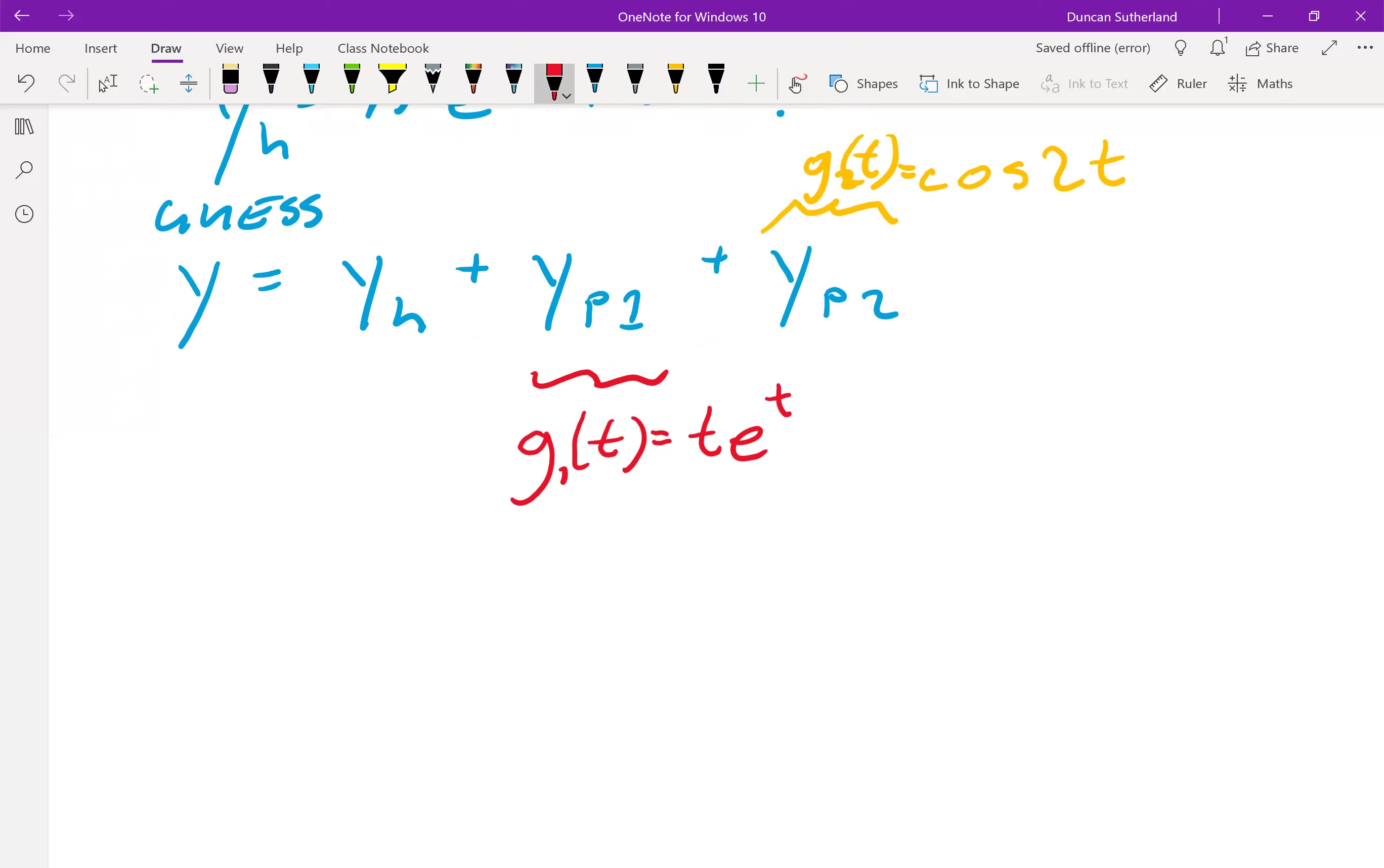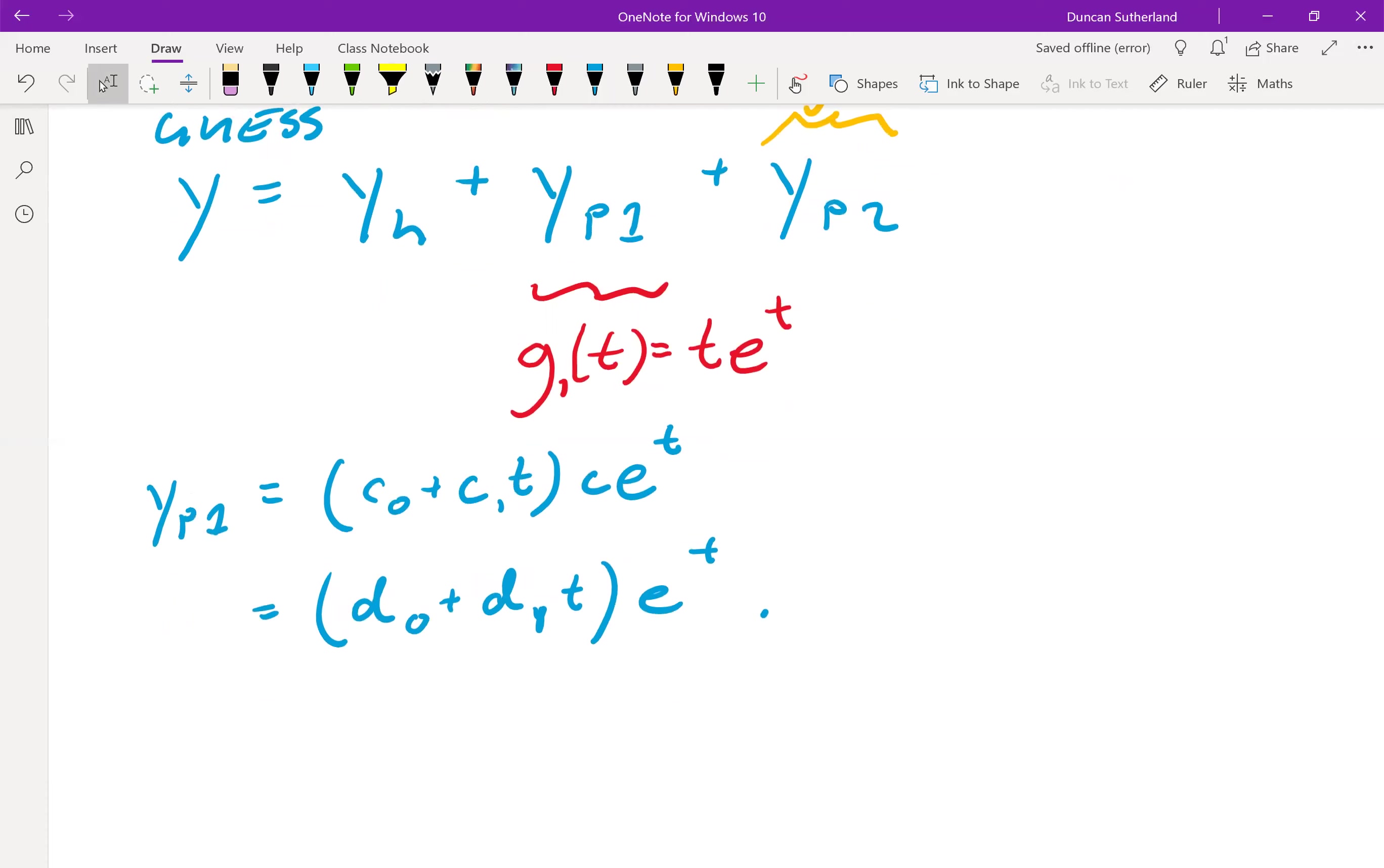This is also a product, right? We've got t times e to the t. So our guess in this case is going to have to be the most general linear function times by the most general exponential function that we can think of. So let's start putting this together. y_p1 equals c0 plus c1 t. You can put in a c there if you like, e to the t. But that's just going to rewrite. We can just factor that into these. We can call these d0s just to make sure that they're different. Right. We can always do that.